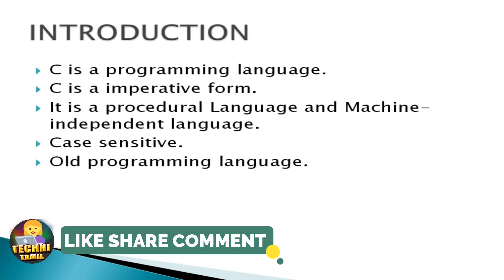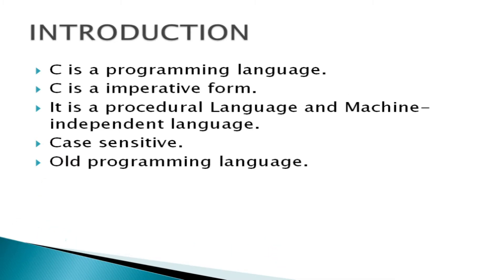C programming language is a communication tool — we use it to share information between two humans. A programming language is used to communicate with a computer. We are going to use the programming language to give a set of instructions.